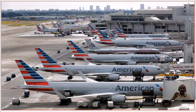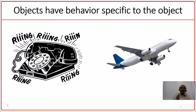Similarly, if you take aeroplane objects, each of these aeroplane objects is identified with a unique flight number. It has certain data points like the number of seats, the color, the number of engines, and they perform certain functions called flying — that is takeoff, landing, and flying in the air. The category of telephone performs functions like ringing, and the category of aeroplane performs behavior called flying. These behaviors are unique to that category of objects.